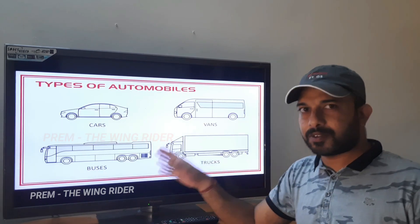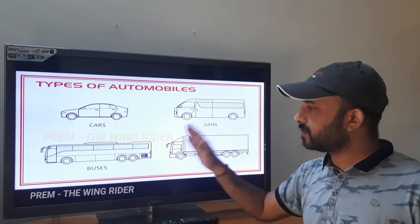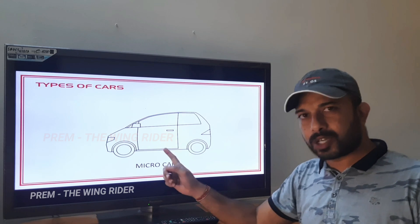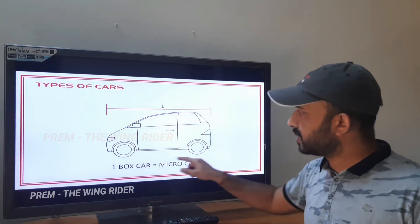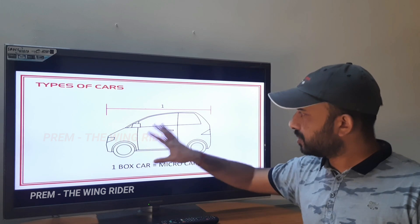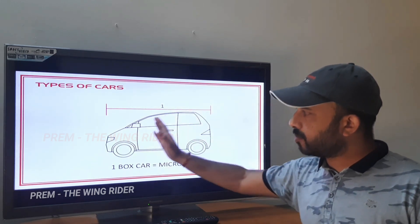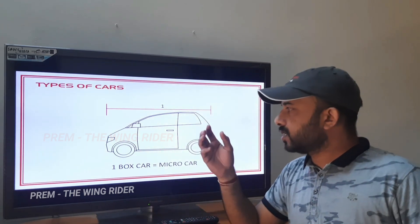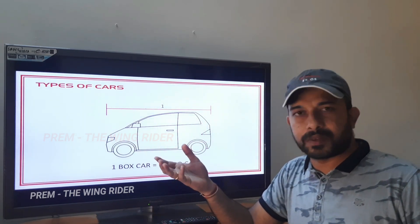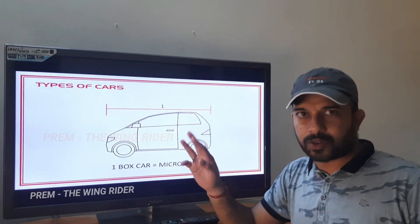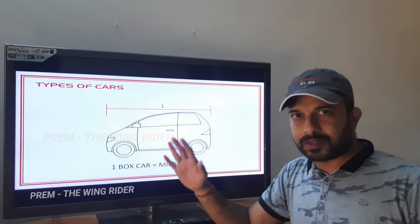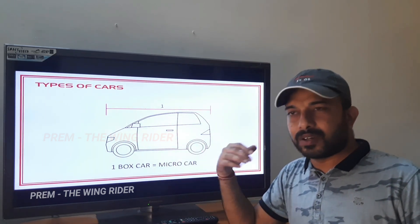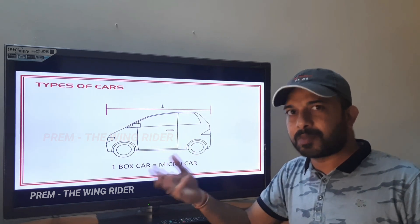Next are the types of automobiles. The types include cars, vans, buses, and trucks. Starting with types of cars: the first one is the microcar. A microcar is a one-box car — designed in a single shell combining the engine compartment, passenger compartment, and cargo area. The engine is small, around 600cc. It has two or four seating options. It is very suitable for city driving, and parking is a lot easier. This car is very famous in certain countries.